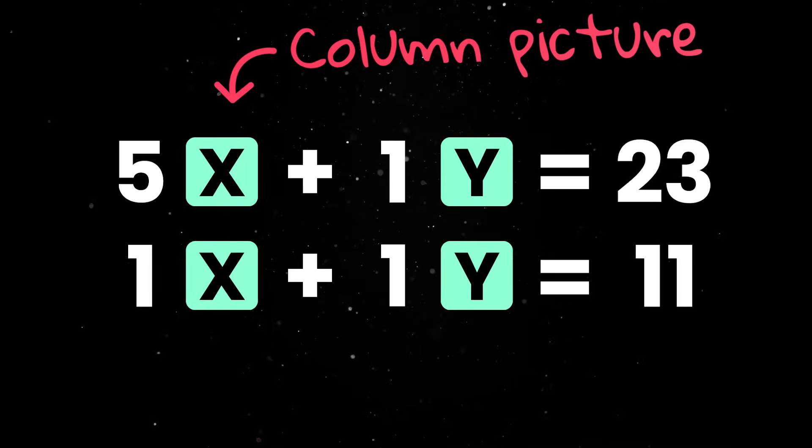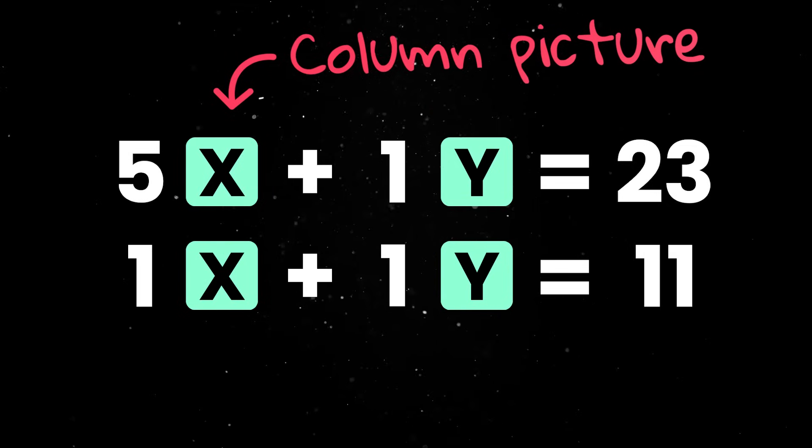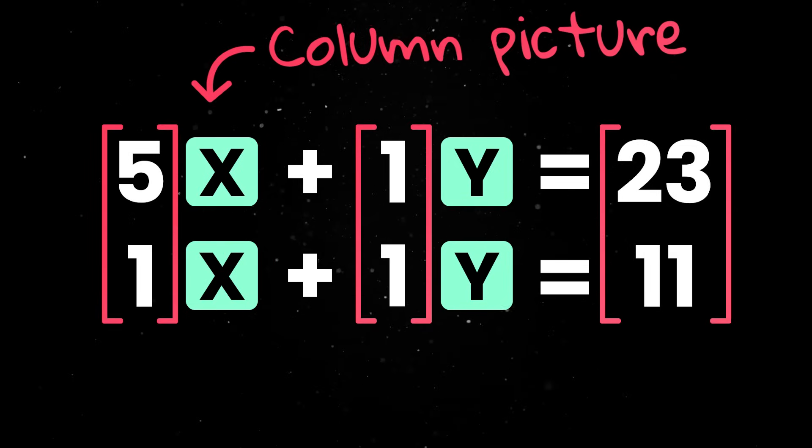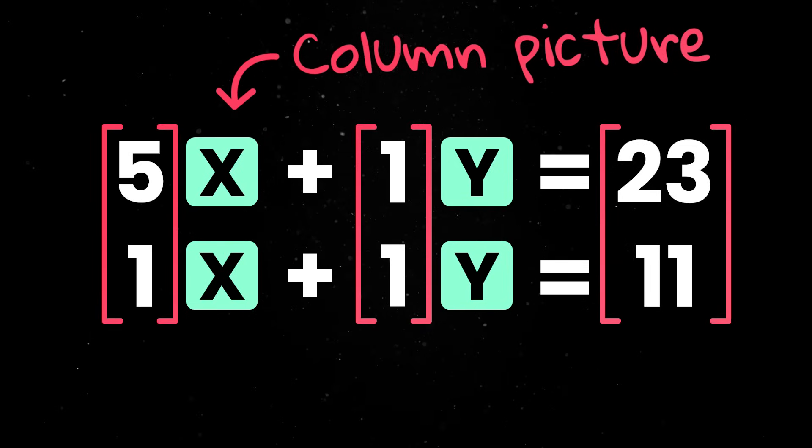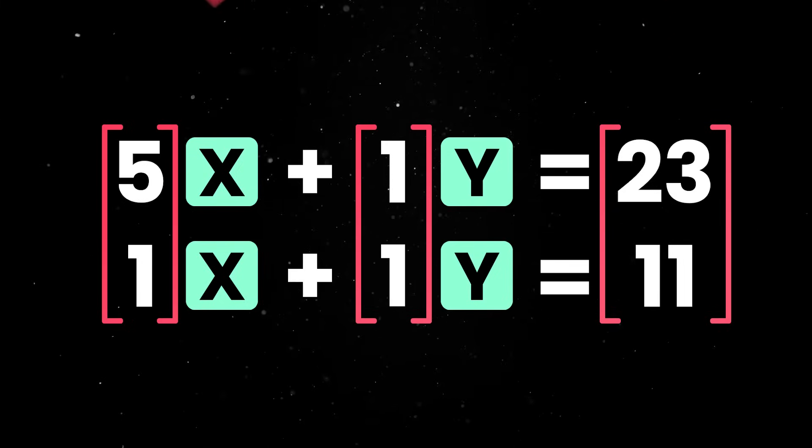The column picture assumes that instead of having two separate equations, we have only one equation where the numbers from the columns become vectors. So each column represents the direction and scale of one variable and our goal is to find how much of each vector we need to combine to reach the target point.